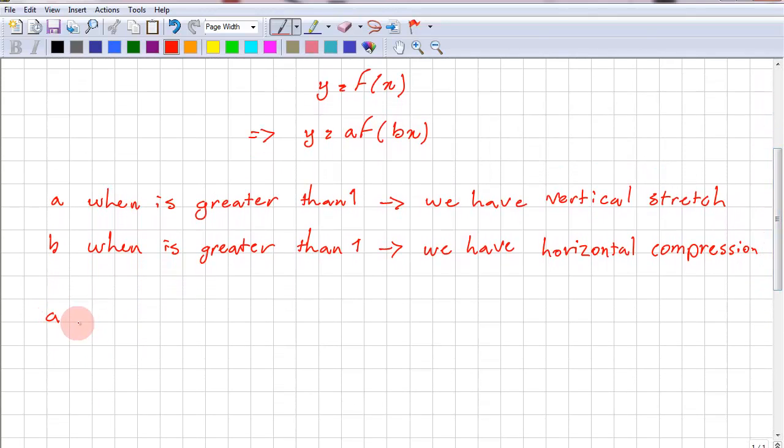Our a here is 7/3, which is greater than 1, so we have a vertical stretch. Our b is equal to 5/7, which is not greater than 1.